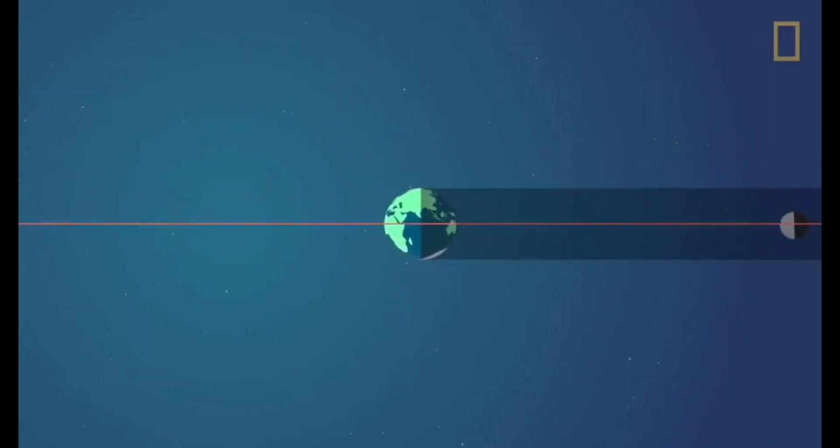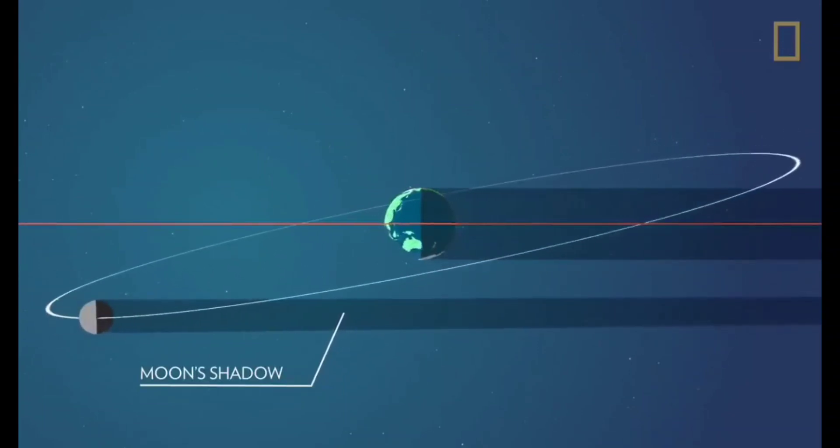This is because the moon's orbit is tilted just over 5 degrees relative to earth's orbit around the sun. For this reason, the moon's shadow usually passes either above or below the earth.